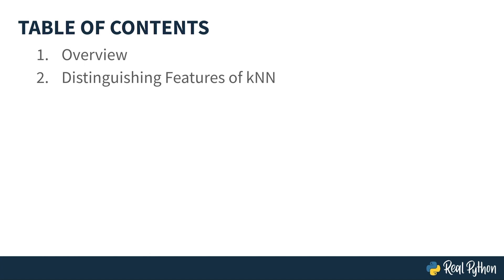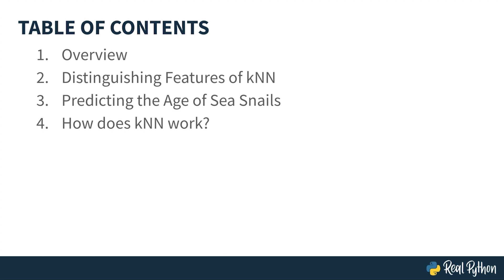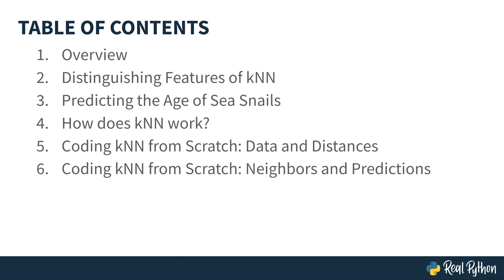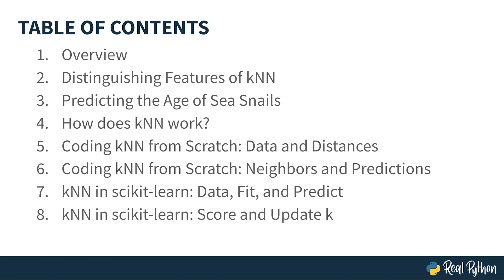Here's what you can expect from this course. After this brief overview, you'll learn what KNN is and what its main features are. We'll use one primary example throughout this course, so you'll get a sense for that dataset about sea snails before diving into a clear explanation of how the K-Nearest Neighbors algorithm works. Next, you'll get a chance to code up your own KNN model, first from scratch, and then with the machine learning package scikit-learn.